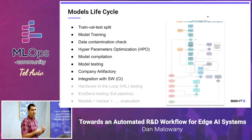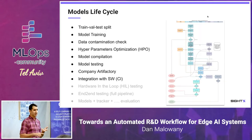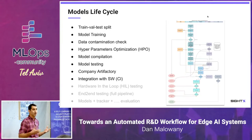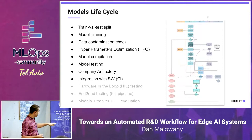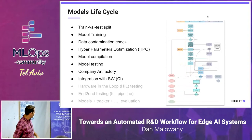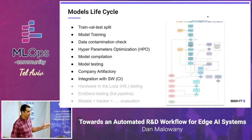From there it goes into integration with our software, because the software is a bunch of models. We have models for object detection and classification, key point extraction, and re-identification. We have several models used in our solution, with different flows in the system. All these models integrate as part of the CI into testing. Once we analyze the process, we can define how things move from one place to another with their metadata, and ensure they are automatically tested.